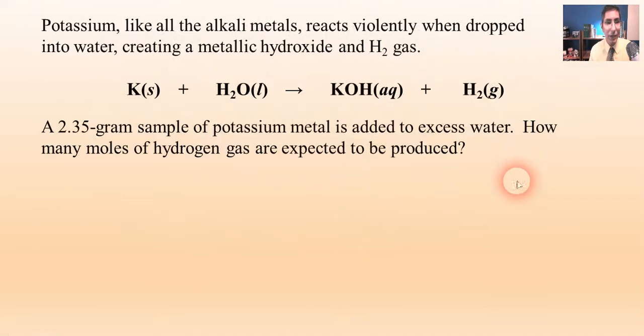Let's try another example. This time, we're going to take some potassium. So we had a fairly violent reaction in the last example, we have a fairly violent reaction here too. Potassium, like all the alkali metals, reacts quite violently when dropped into water because all those alkali metals will create a metallic hydroxide, like potassium hydroxide here, and H2 hydrogen gas, which is highly explosive. So we're going to take a 2.35 gram sample of potassium metal and drop that into excess water. How many moles of hydrogen gas do we expect to produce? Well, once again, the first step before we do any of this is to balance that equation. So I'm going to balance it like this.